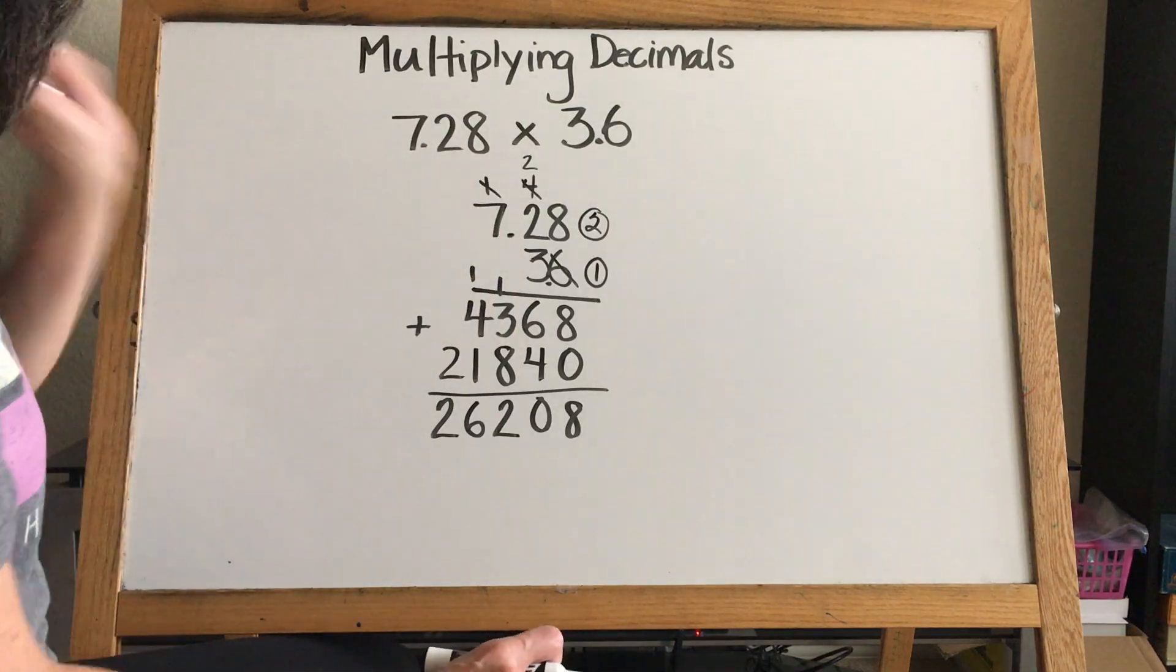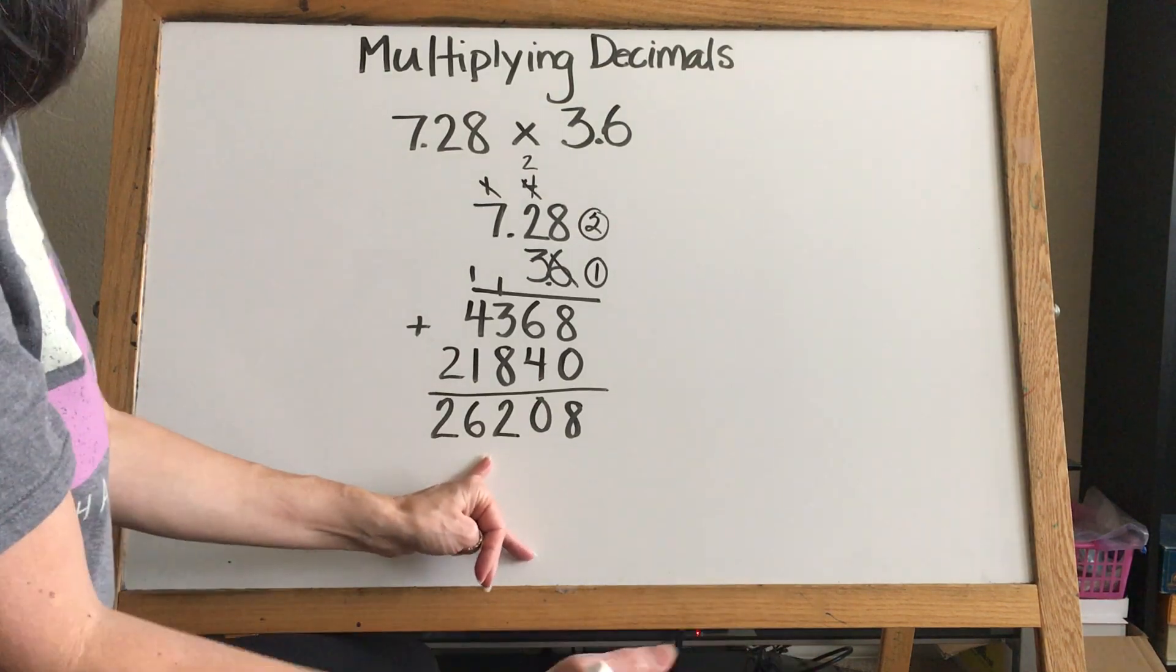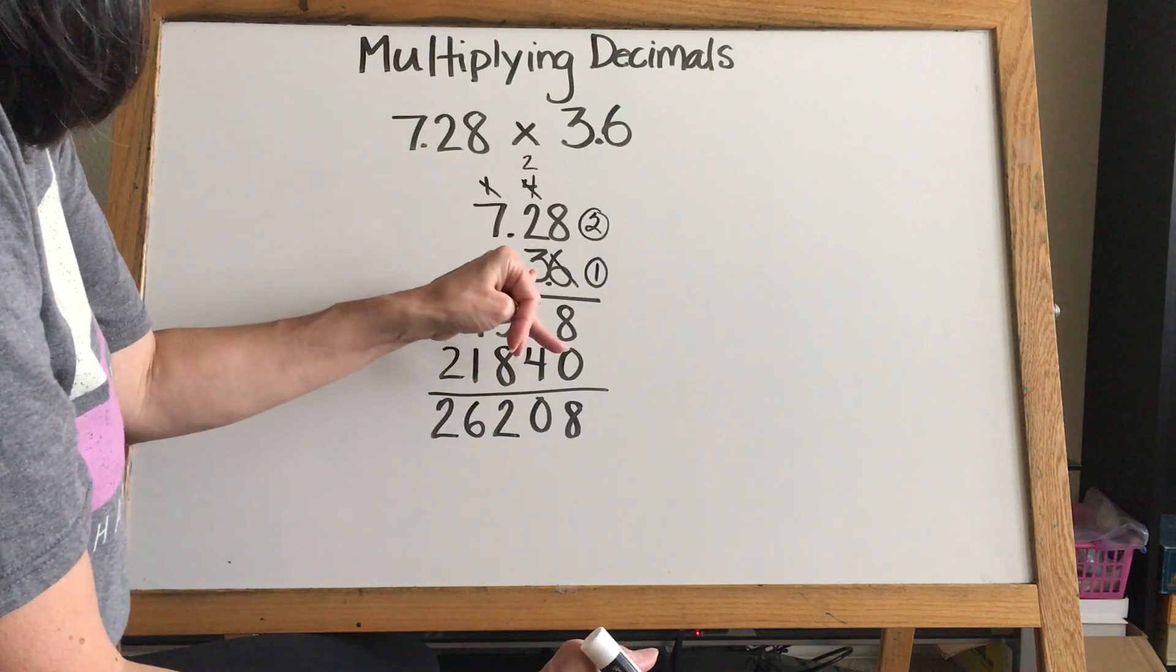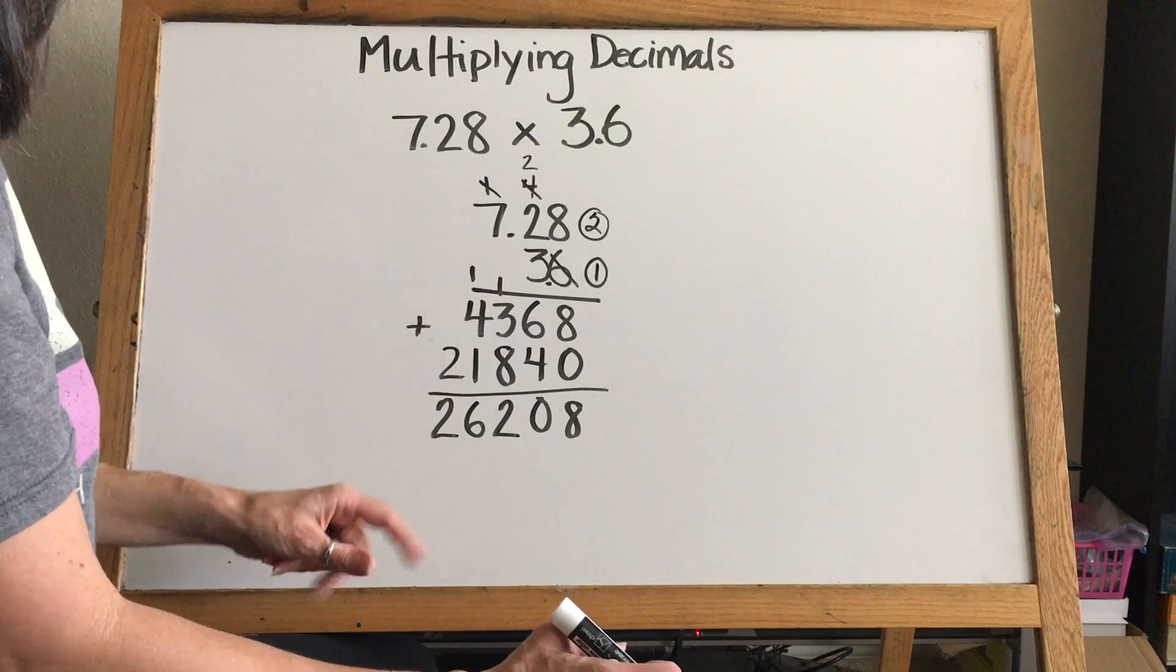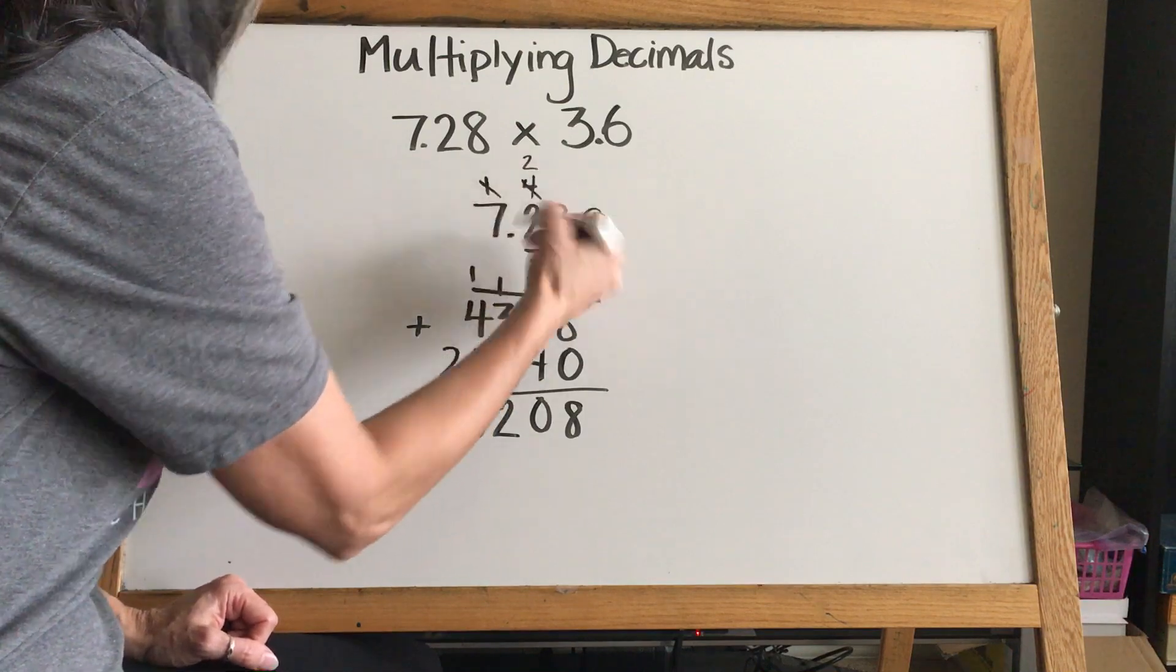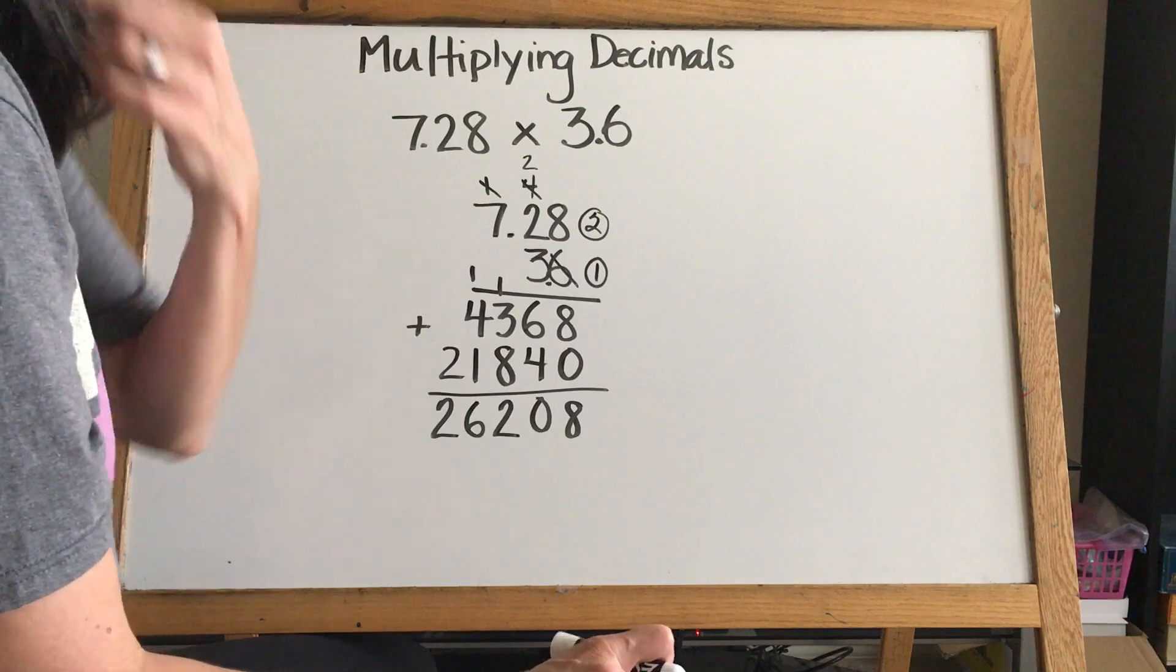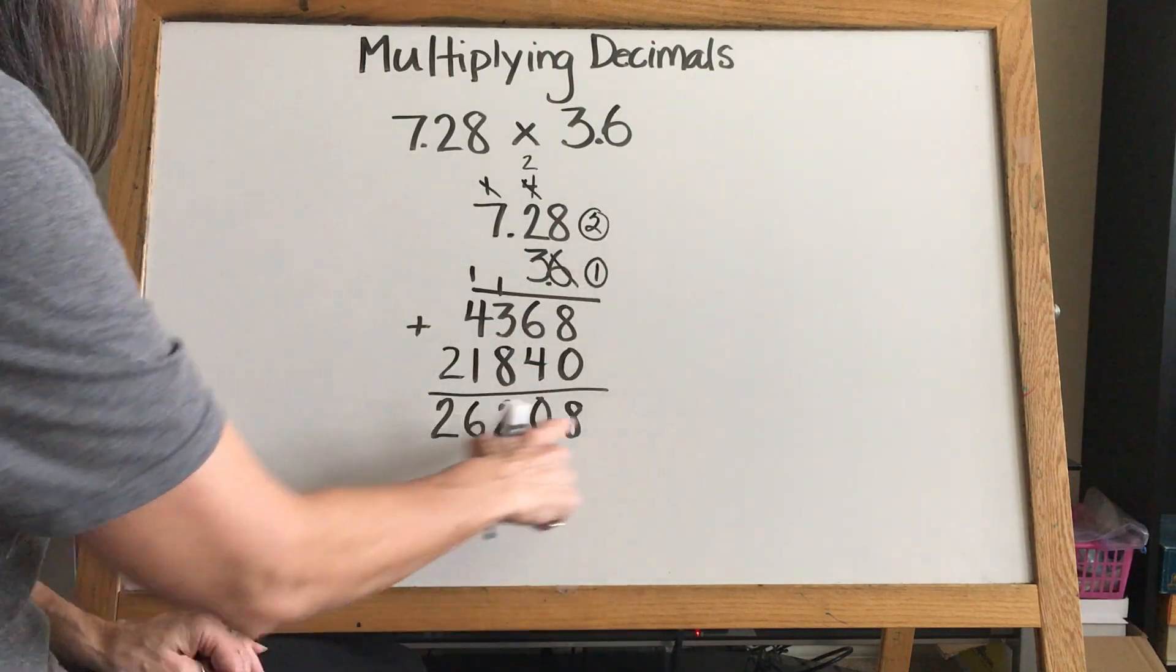If we didn't put our decimal and this answer was 26,208, that wouldn't make sense, right? Seven groups of three is not going to give us 26,000. So we know there's going to have to be a decimal in our answer. We come back over here, we've got two digits and a digit here. Some teachers teach you to circle these or put a box around them - just whatever works best for how you think is great. But I'm going to move my decimal back three times.